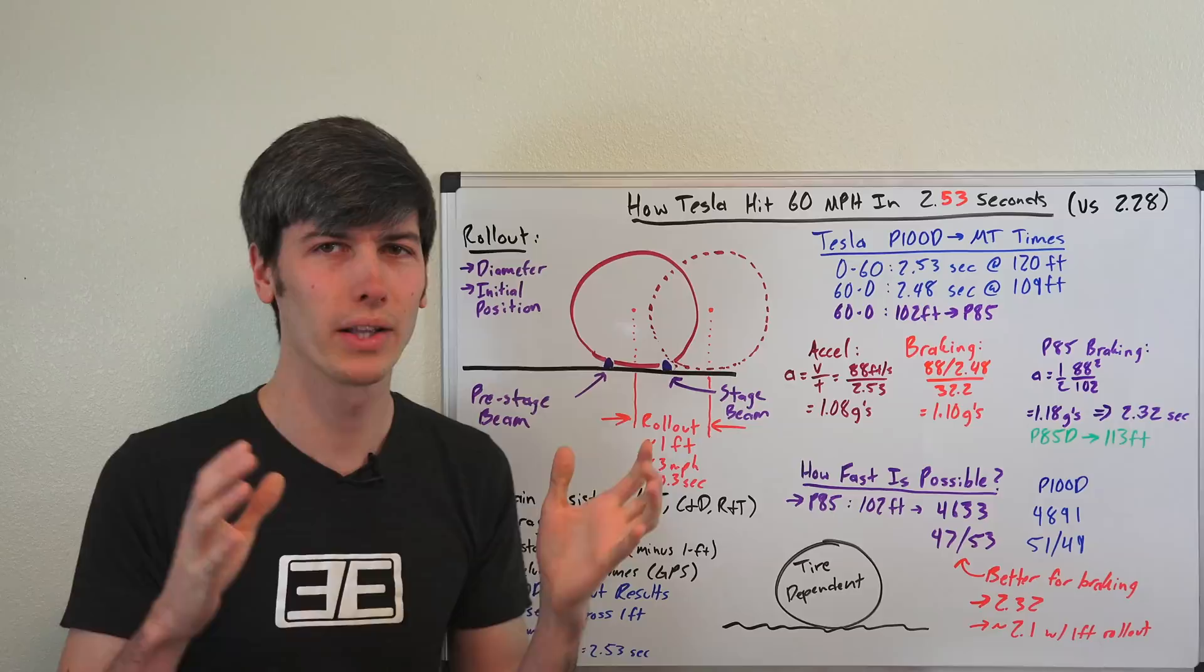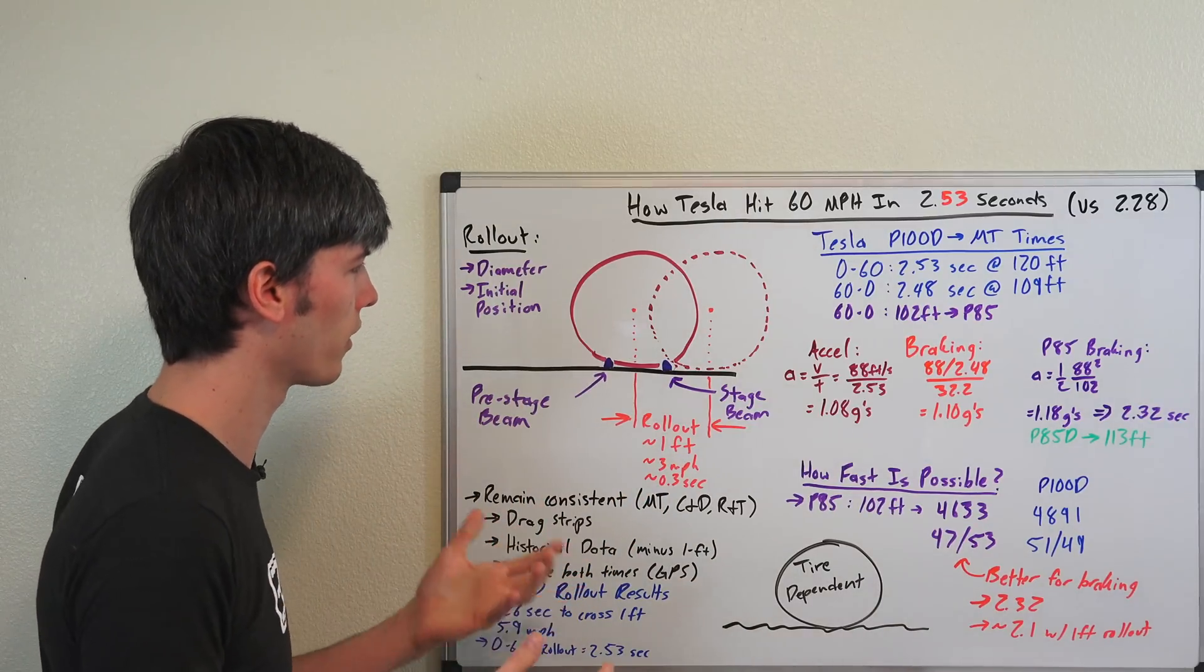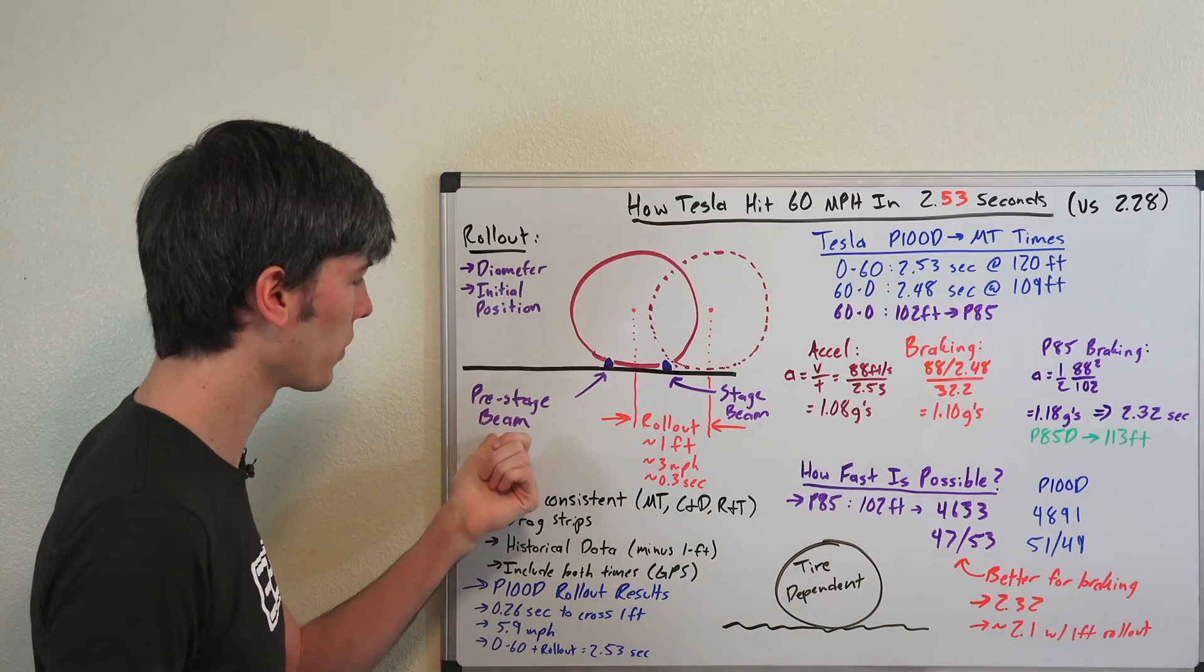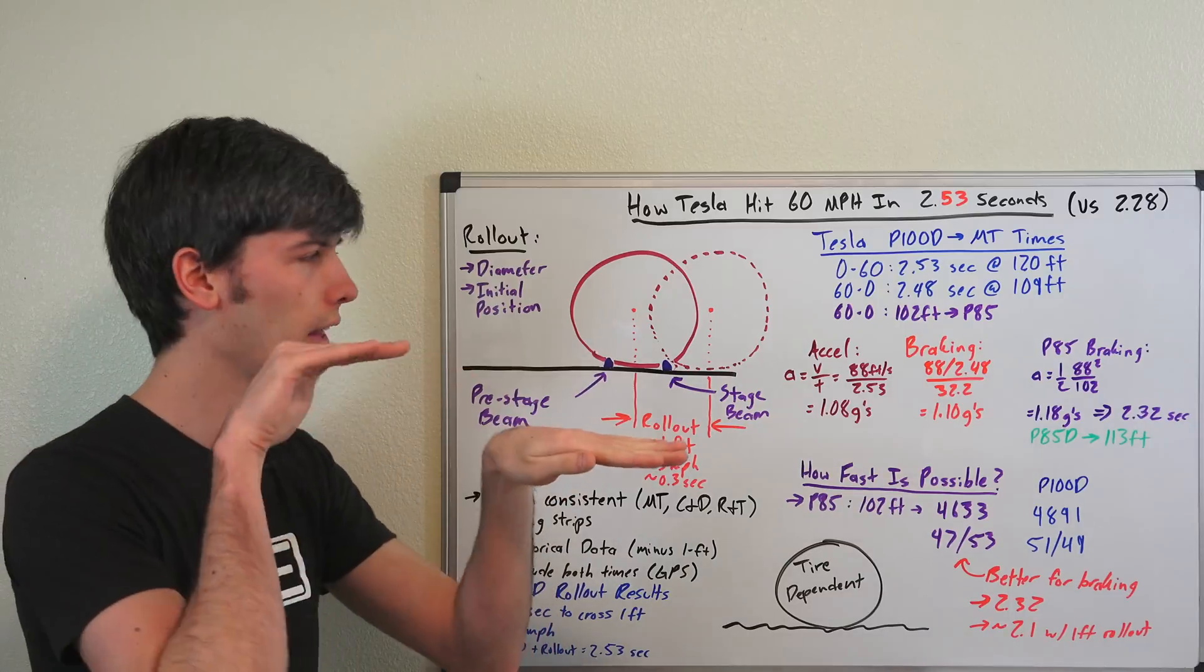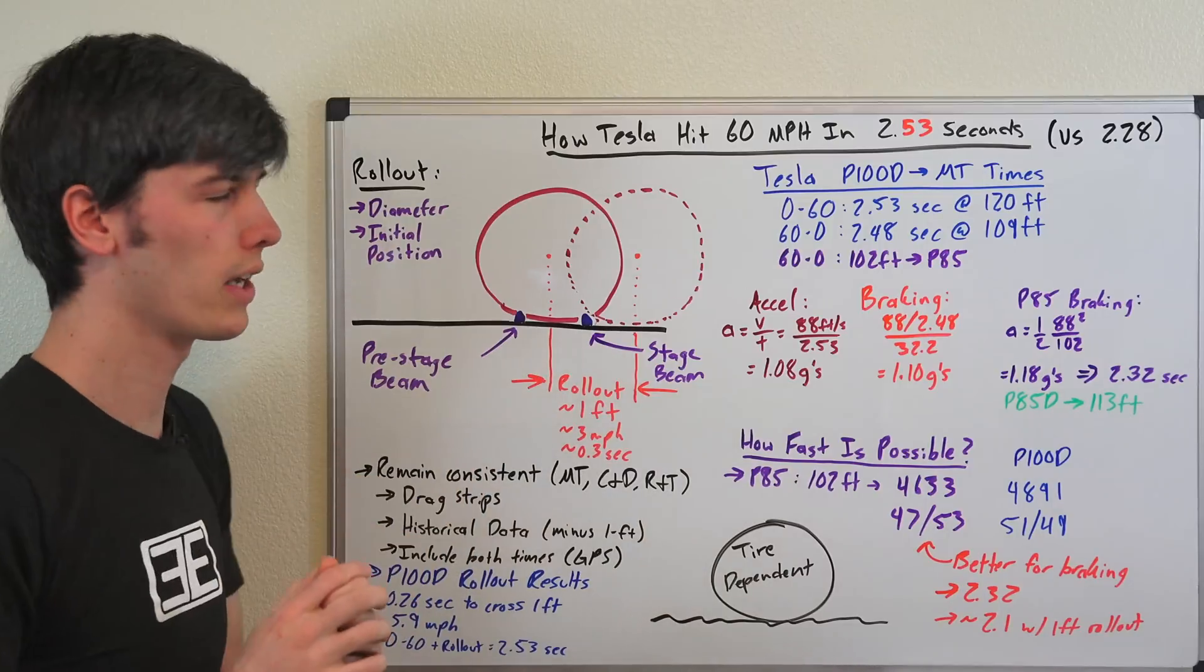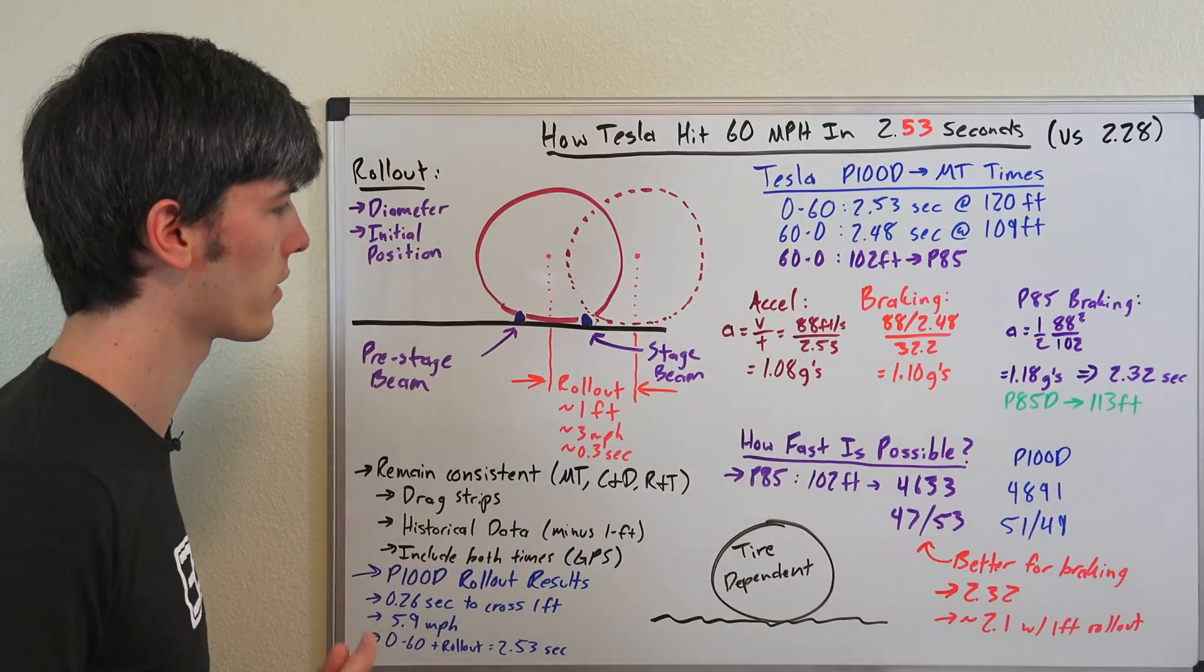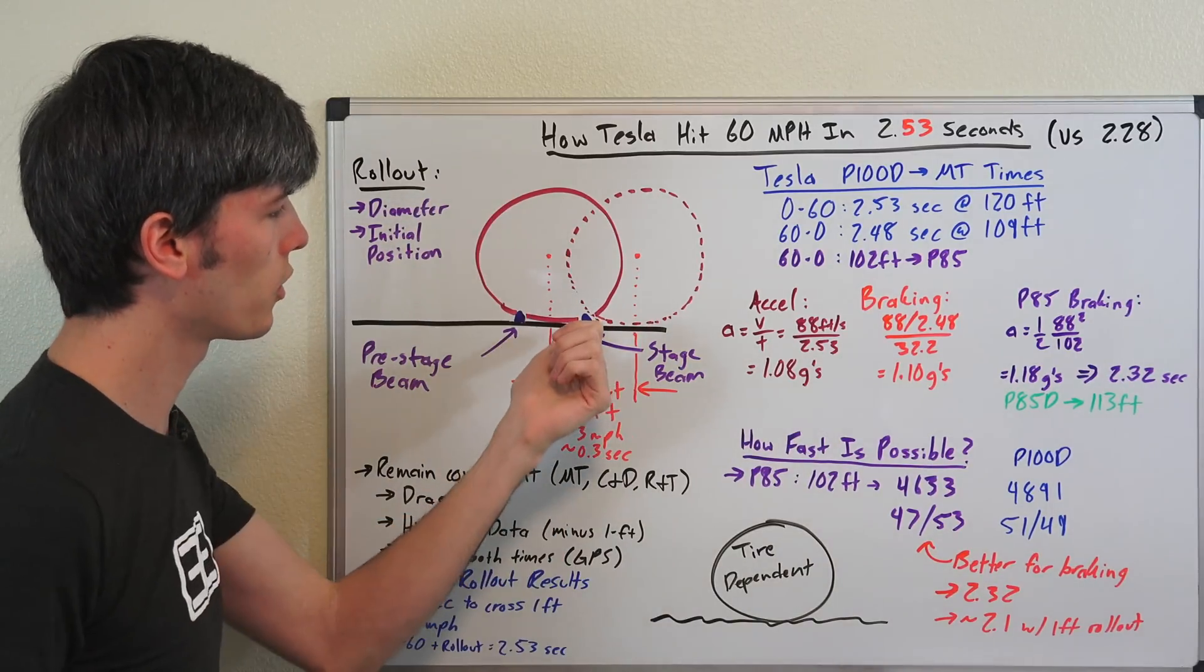So what is rollout? Well, if you take your car to a drag strip, you may have already known what this is. Basically what happens is there's going to be two light beams going across that track. You're going to have the pre-stage beam and then you're going to have the stage beam. So as you're inching up to that start line of that drag strip, you're going to hit the pre-stage beam and that's going to let you know that you're seven inches away from the stage beam. So slow down, inch up very carefully until you hit that stage beam.